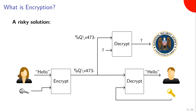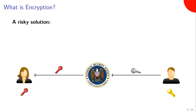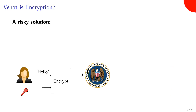However, this solution is still kind of risky. We still have to make sure the keys are distributed in advance. If the attacker is not simply passively eavesdropping but is willing to actively interfere, the eavesdropper might intercept the public key that Bob is sending to Alice and replace it with his or her own public key. Then Alice would think the key she received belongs to Bob, use it to encrypt her message, and suddenly the attacker can read the message again.